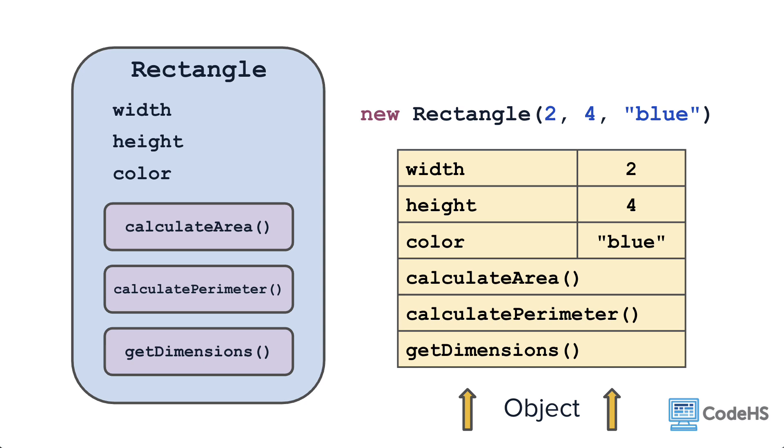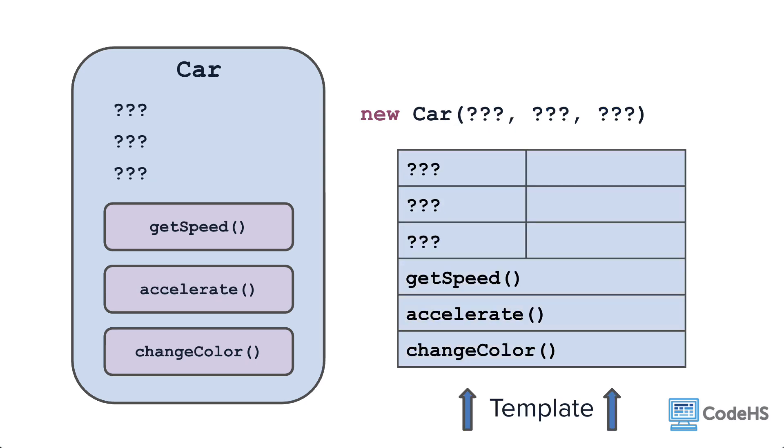Okay, now one for you to try. Here is a car class with three defined methods: get speed, accelerate, and change color. What three attributes might you want to include in the car class? Think about the data that could describe each unique instance, or car object, that it creates. Pause the video for a few seconds and come up with your answers.